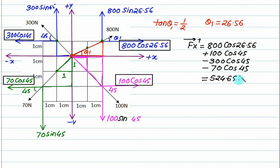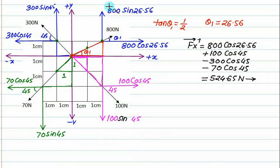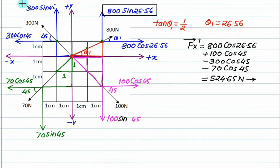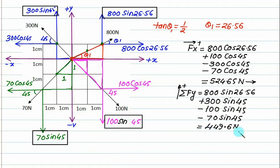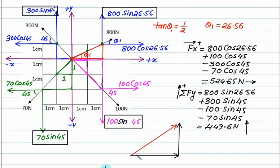For the y calculation, the 800N and 300N y-components are positive, while the 70N and 100N y-components are negative. The value 449.6 is positive, so the y-resultant goes upward. We construct x first, then y on its tip, and use Pythagoras to find the resultant. The resultant is 690.95 N and theta is 40.5 degrees.